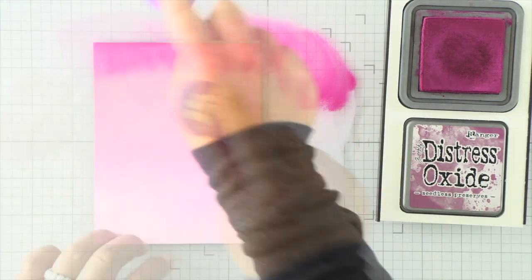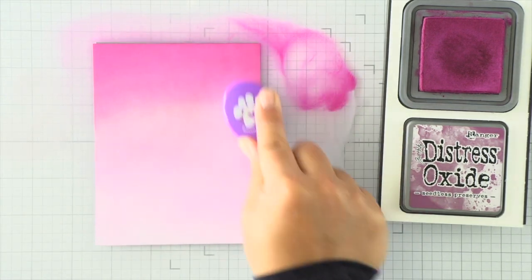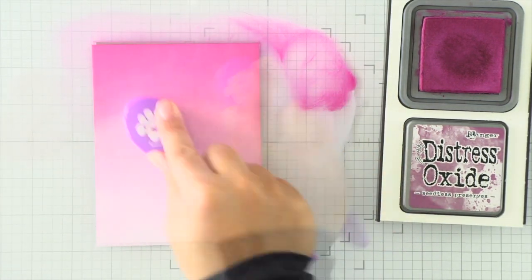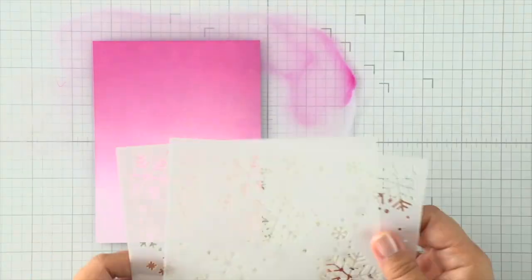For the darkest color I'm using seedless preserves and blending that color about a third of the way down. Then I go back in with the Victorian velvet and blend back and forth until I get a nice smooth blend.